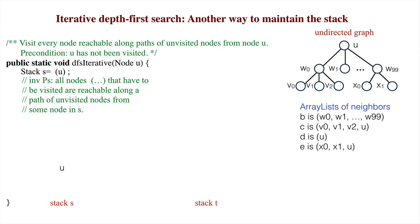The iterative DFS first pushes U on the stack. Then, it pops U from the stack and pushes its neighbors on the stack. Let's put them in reverse order, so the stack now contains W99, etc., down to W0. Our alternative data structure is a stack T. The method starts by visiting U and then pushing on the stack an object that contains a pointer to B, which contains the neighbors of U and the number 0. This denotes array list elements B, 0 onward.